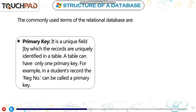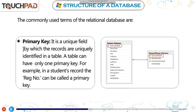Primary Key: It is a unique field by which the records are uniquely identified in a table. A table can have only one primary key. For example, in a student's record, the registration number can be called a primary key.